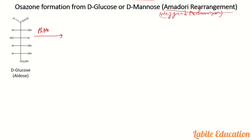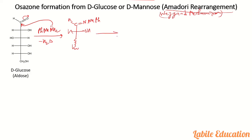The first step: when phenylhydrazine reacts with glucose, there is nucleophilic addition followed by elimination, giving an intermediate with N–H and Ph groups. This intermediate can then tautomerize to form a structure with a C=N double bond and an OH group. A six-membered chelate ring is formed through hydrogen bonding, which is a stable chelate.